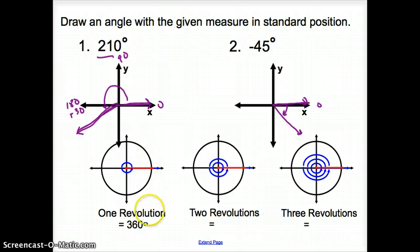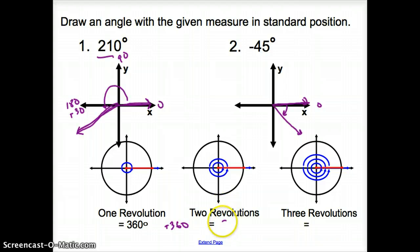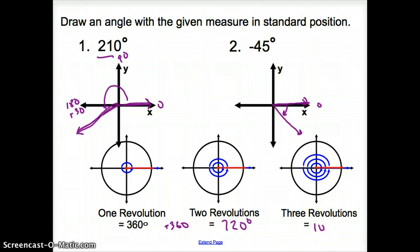Hopefully we know that one whole revolution is 360 degrees. Two revolutions would be: go around once, go around again, so we add 360 to get 720 degrees. And for three revolutions, you add 360 again for 1080 degrees.